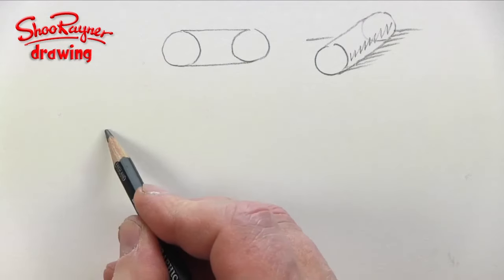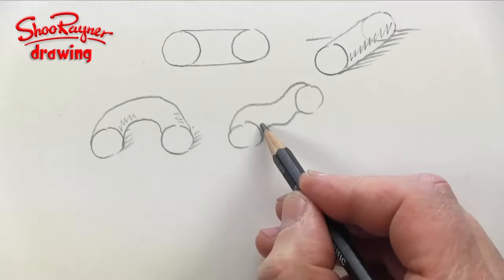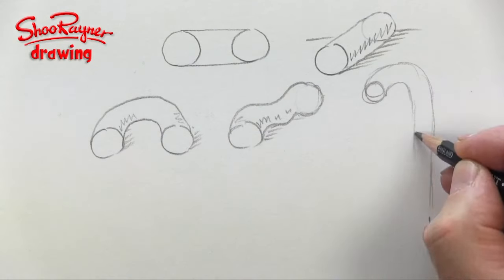The lines can be wavy or curly if you like. This is how we might draw a candy cane.